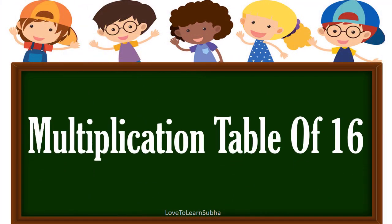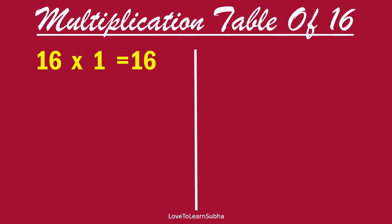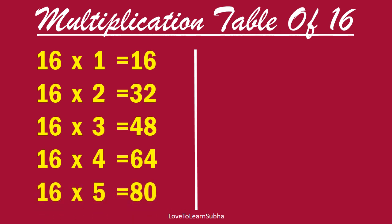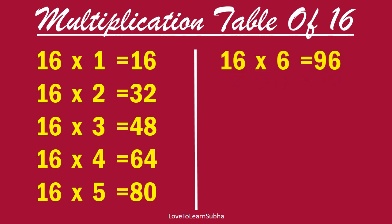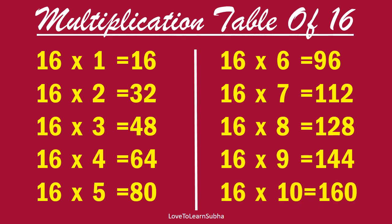Multiplication table of 16. 16×1 is 16, 16×2 is 32, 16×3 is 48, 16×4 is 64, 16×5 is 80, 16×6 is 96, 16×7 is 112, 16×8 is 128, 16×9 is 144, 16×10 is 160.